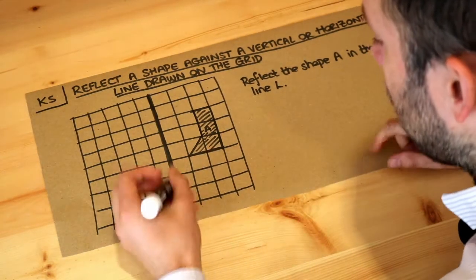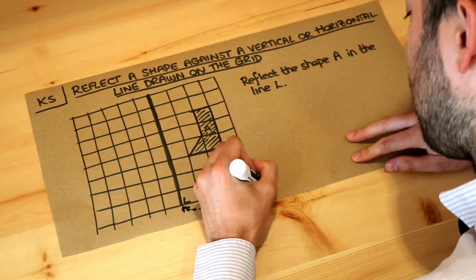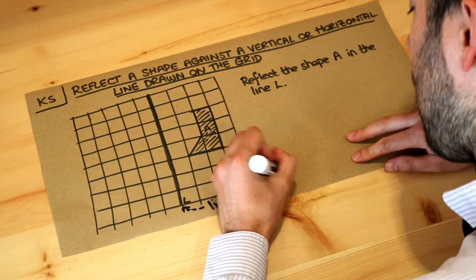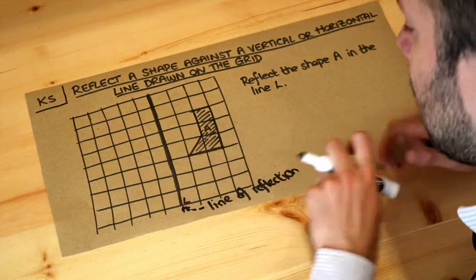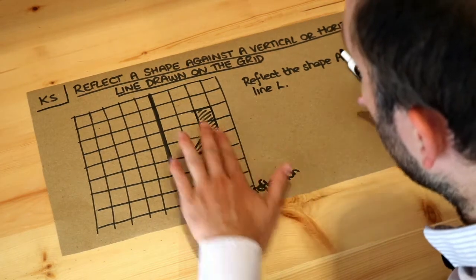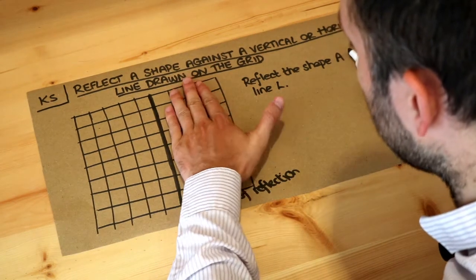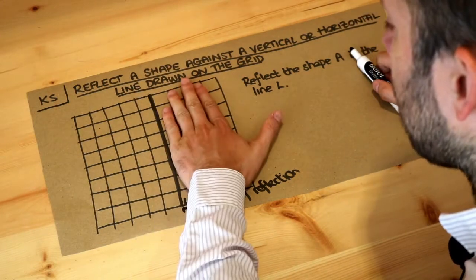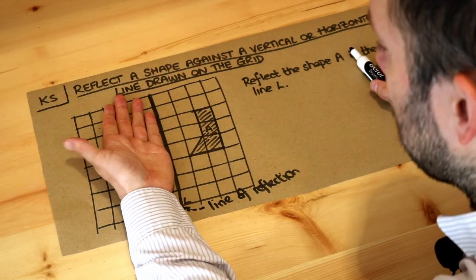So here is our line of reflection and this is the line that we're going to reflect this shape here into. The way it works is that shape gets copied over like this, it gets flipped over and you'll see on the other side but flipped over.